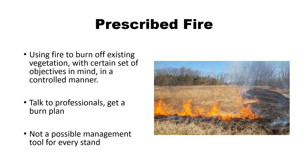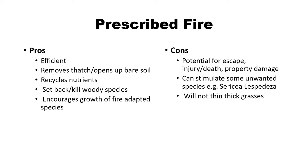Prescribed fire is using fire to burn off existing vegetation with certain objectives in mind and in a controlled manner. The key word is controlled — talk to professionals, get a burn plan. This is a very well thought out, documented, and researched process, so you need to make sure you're doing it safely and within the law. Even though fire is naturally part of a prairie ecosystem, today it's not a possible management tool for every stand, so you will need to evaluate your site.